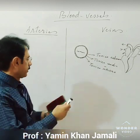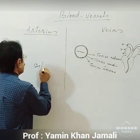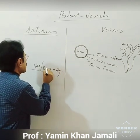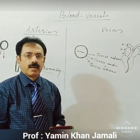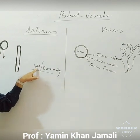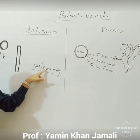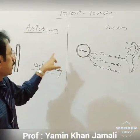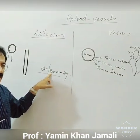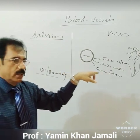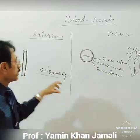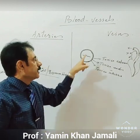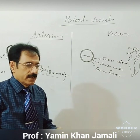The normal blood pressure is 120/80 mmHg. This is the normal blood pressure of a young healthy person. The 120 is called systolic and 80 is the diastolic blood pressure. The blood pressure we measure is arterial pressure, not venous pressure. The pressure within the arteries is high and the pressure of blood within the veins is low, maintained by the pumping action of the heart.